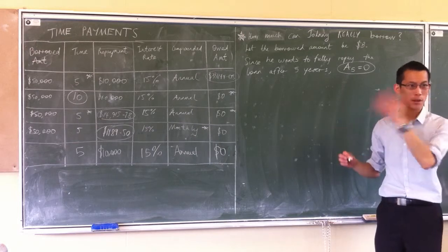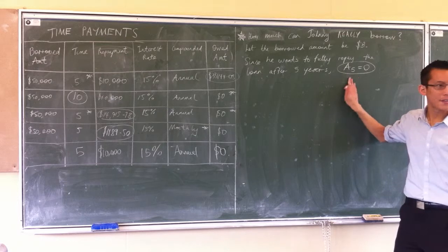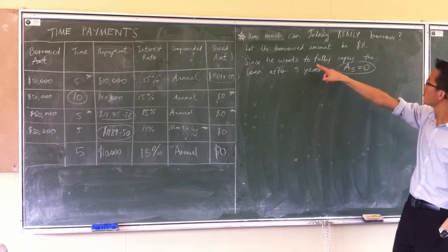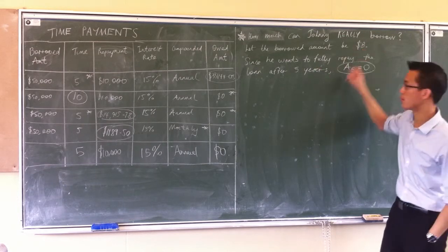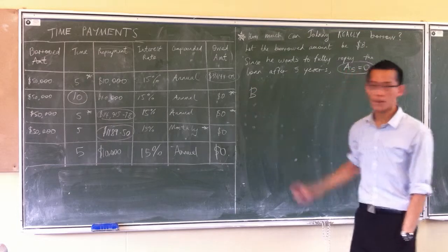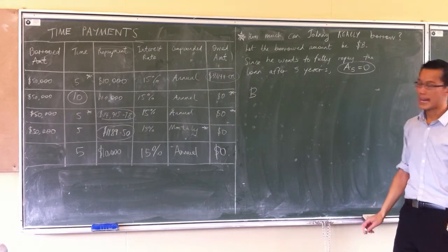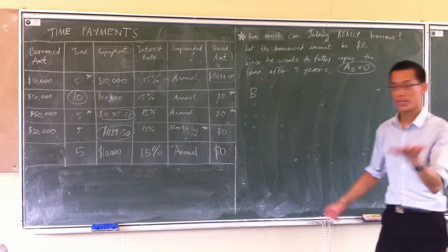So now I can actually start to form an equation based on all this information. What is A5? If my borrowed amount is B, it's not 50 grand anymore. I've got B out the front, and he has the loan for 5 years so he gets 5 lots of interest on it.